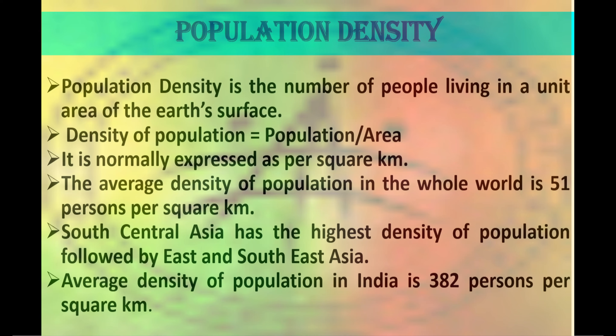Population density means the number of people living in a unit area of the earth's surface. It can be calculated by dividing population by area and is normally expressed as per square kilometer. The average density of population in the whole world is 51 per square kilometer. South Central Asia has the highest density of population followed by East and Southeast Asia. The average density of population in India is 382 per square kilometer.